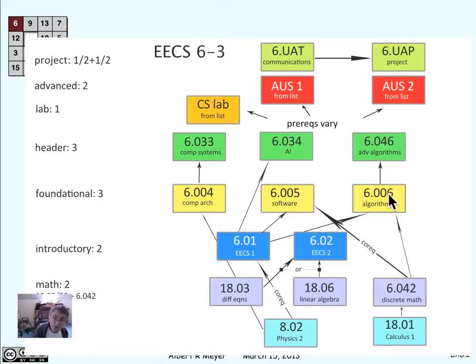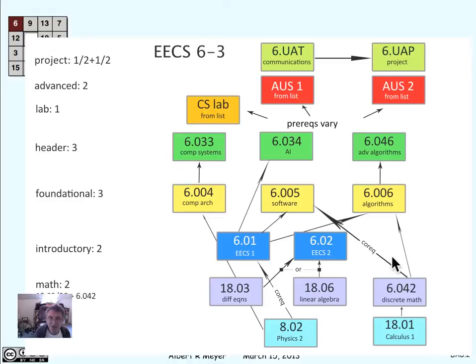When you're planning on when you want to take 6006, you have to attend to not just the fact that you have to take 6042 first and 601 first, but you've got to take the prerequisites of those prerequisites first. So you really have to take 1801 before you can take 6006, and you need to take 802 before you can take 6006. There are co-requisites here — let's just ignore those and pretend that they were prerequisites. So that's what this diagram is telling us, and this is a DAG.